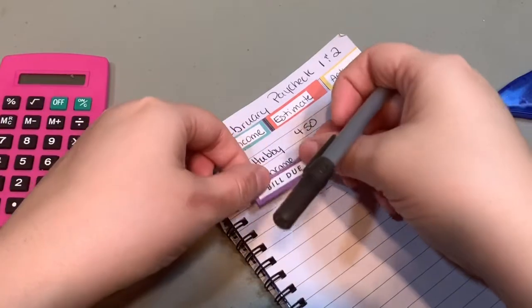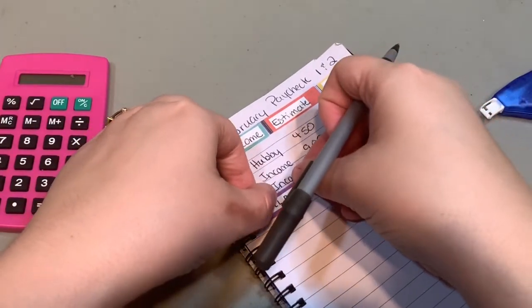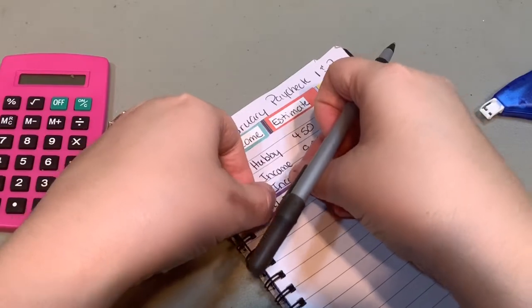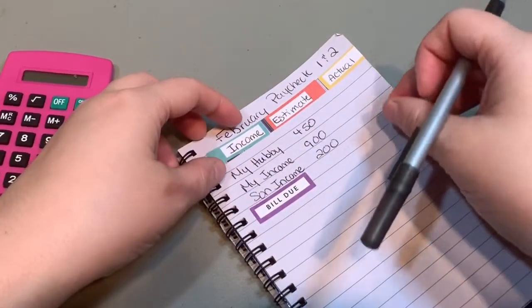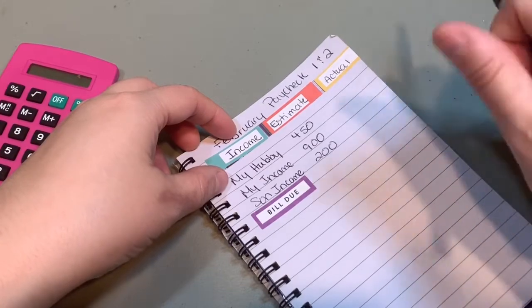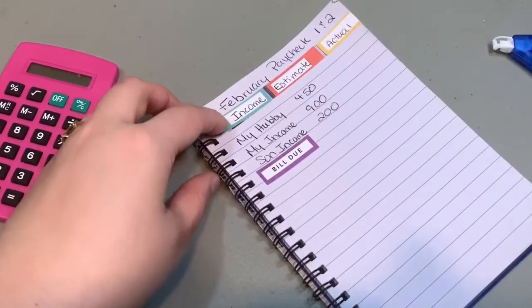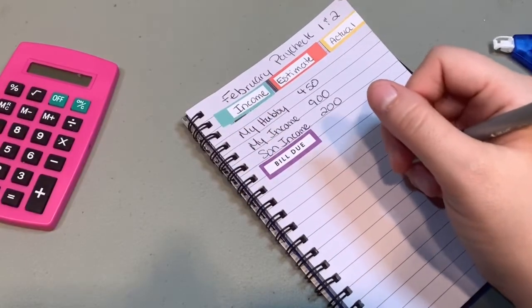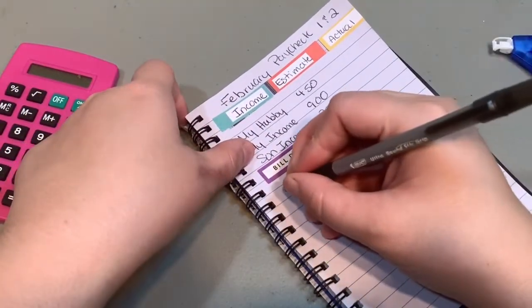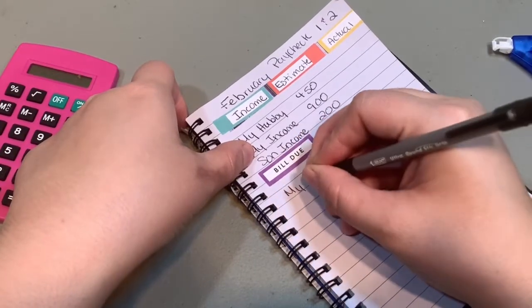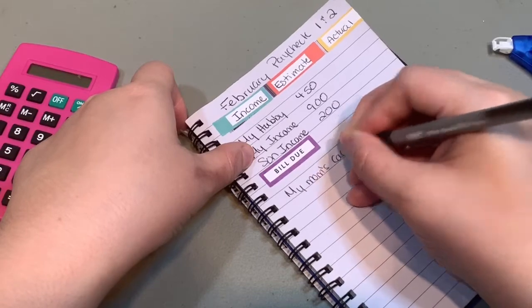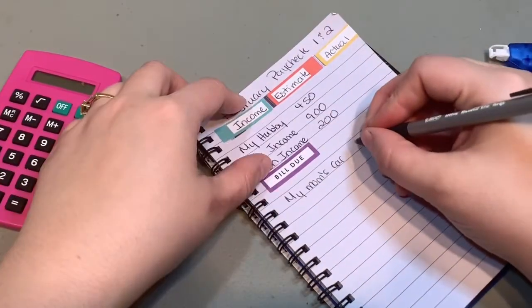Anyways let's go ahead and put the bill due, but I need to leave some space for, no that's fine. Okay so bill due. And then for this month we have a lot of bills that are due. So my mom's car, and that is $160.